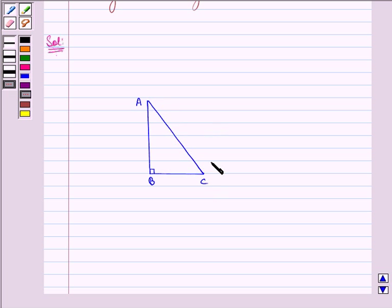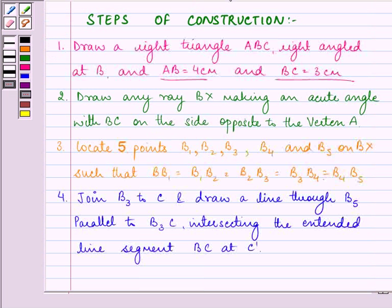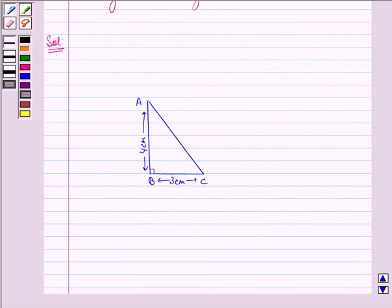So we have triangle ABC where BC is 3 cm and AB is 4 cm. Now the next step is to draw any ray BX making an acute angle with BC on the side opposite to the vertex A. So we have ray BX opposite to the vertex A.